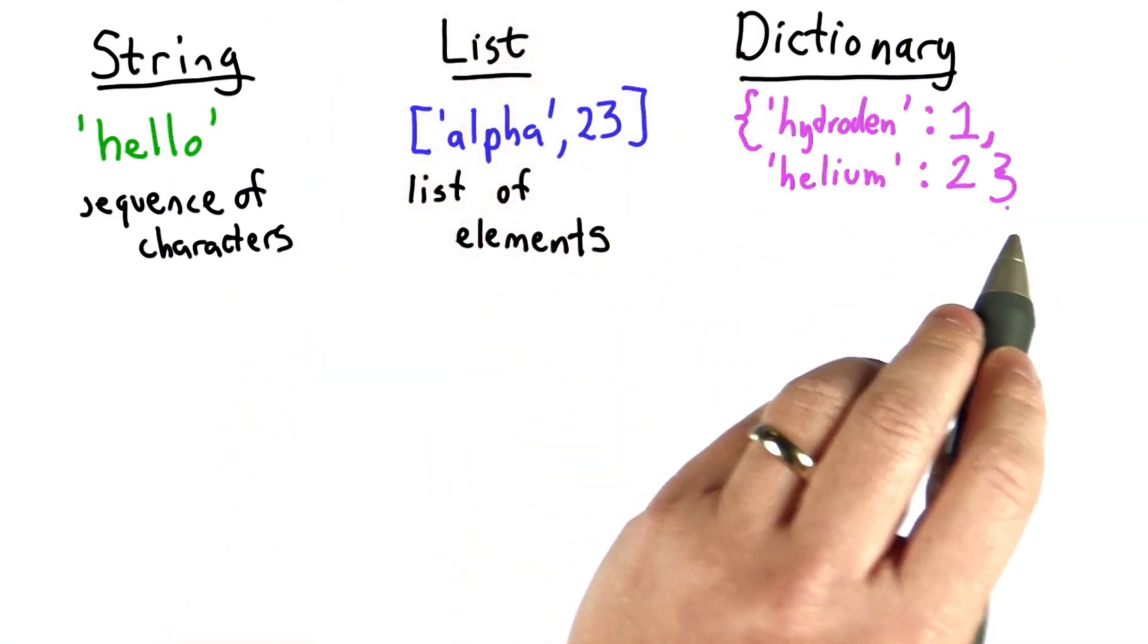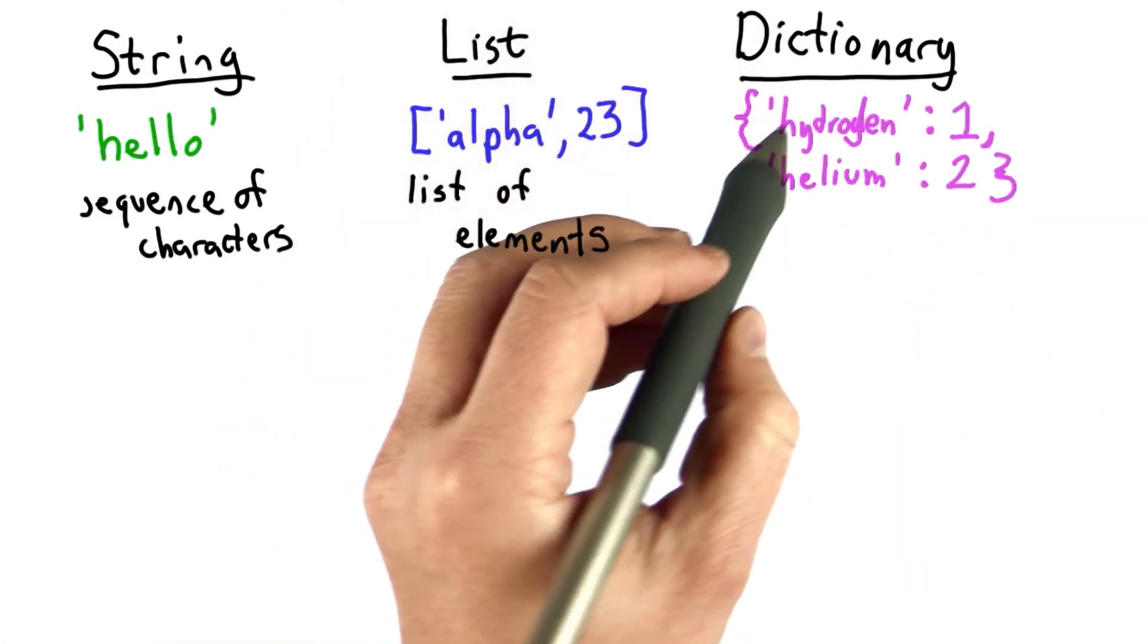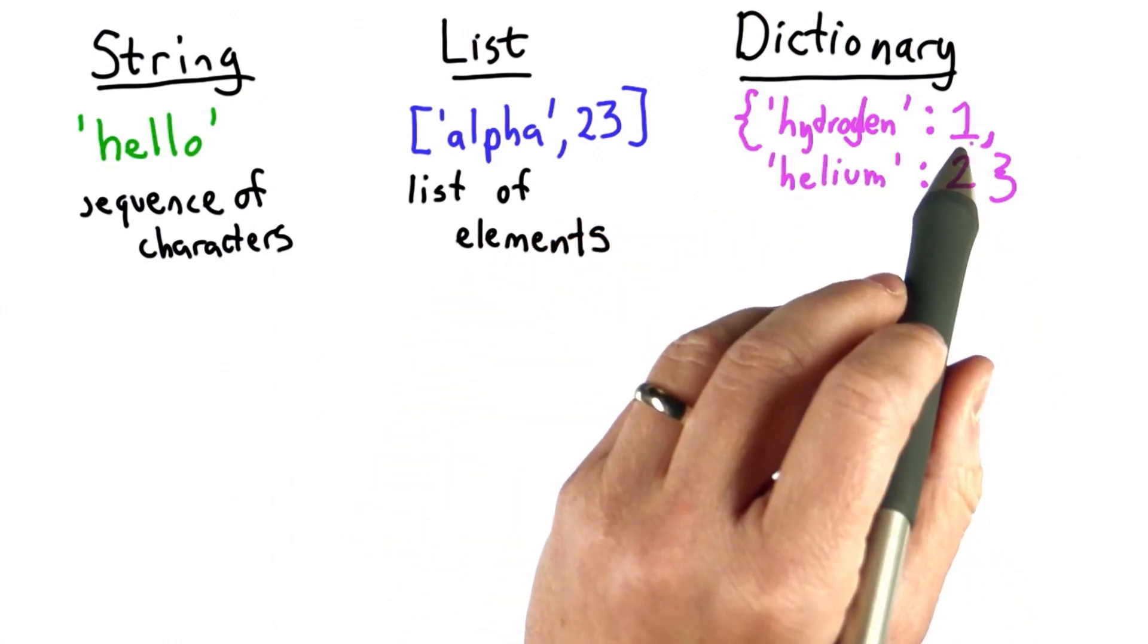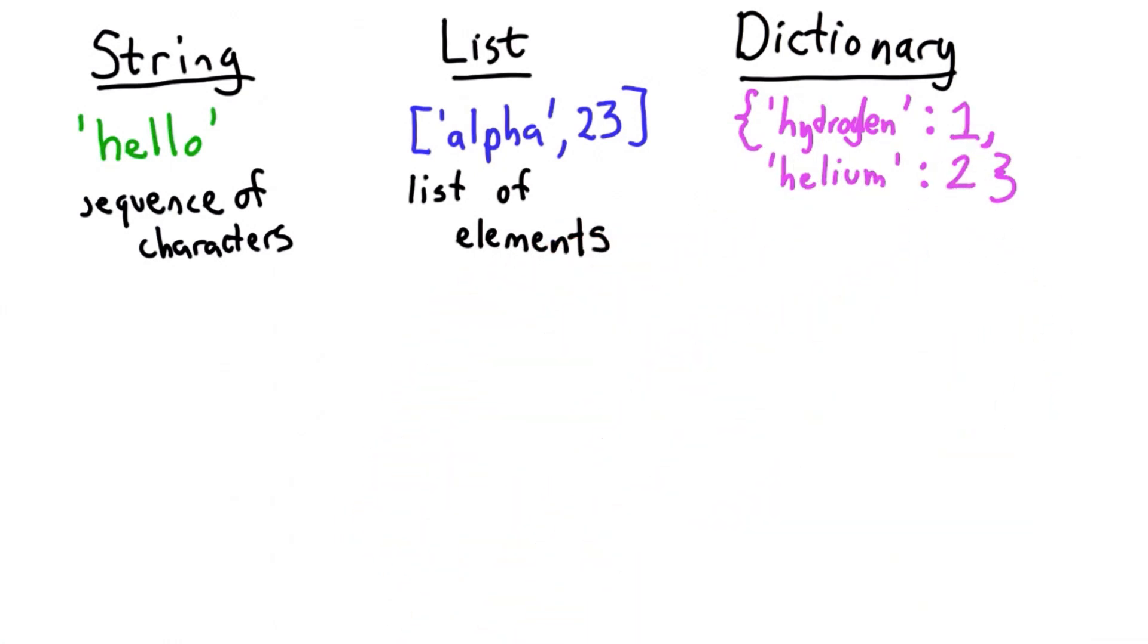So here I've created a dictionary with two elements, and each element, the key is a string. Here's the string hydrogen. And the value associated with that element is a number.